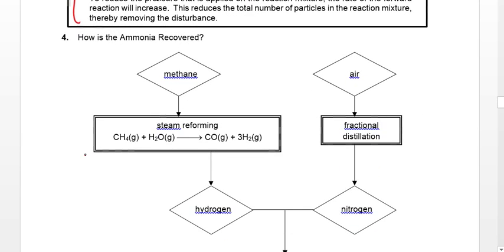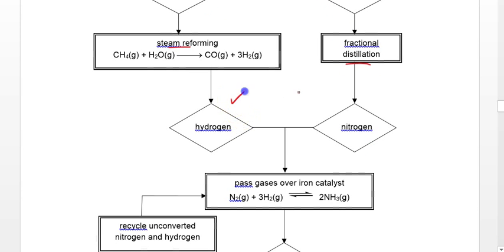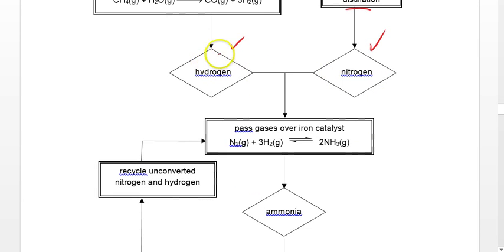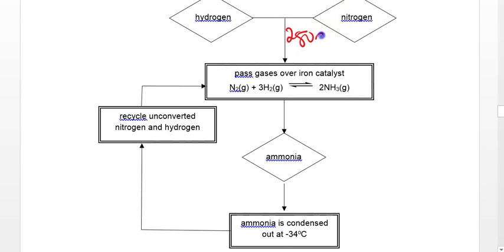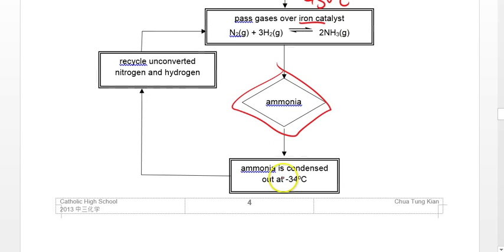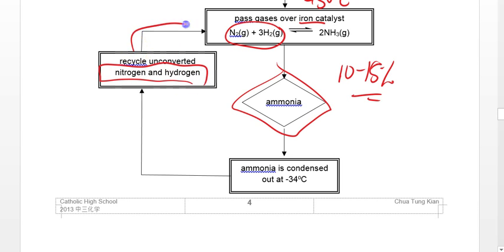Quick summary: N2 comes from air, H2 comes from steam reforming. These two gases come together at 250 atm, 450°C, with an iron catalyst to give ammonia. The ammonia is condensed out at −34°C. The yield is about 10–15%, which means a large part of the reactants is unused. By condensing out the ammonia at −34°C, N2 and H2 remain as gas and can be recycled back into the Haber process to produce more ammonia.